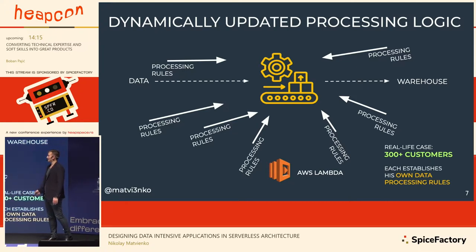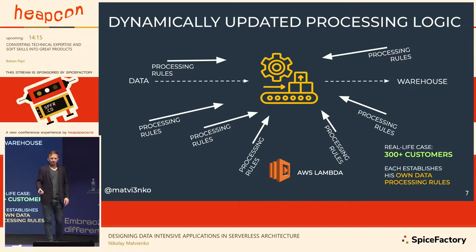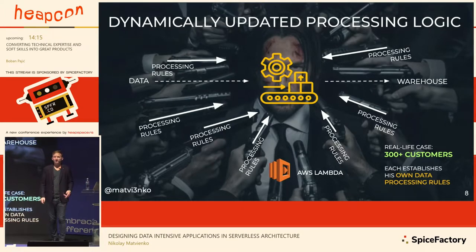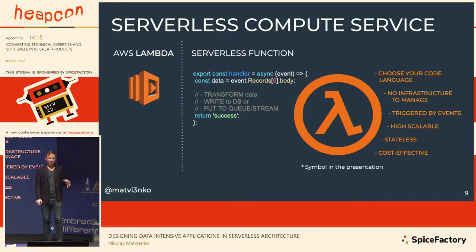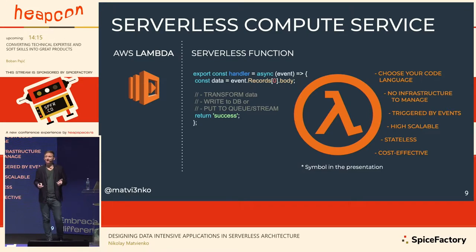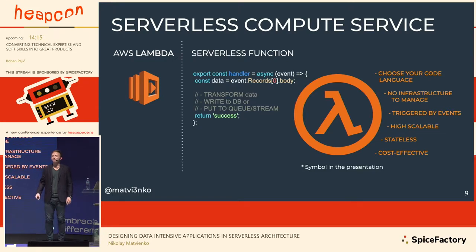We used AWS Lambda for that project. AWS Lambda is a compute service where you write your own code and it is automatically invoked in a container — you don't need to manage your infrastructure. It's triggered by events, highly scalable, stateless, and very cheap, which is why business loves it.